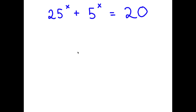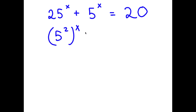In this problem I have 25 to the power of x plus 5 to the power of x is equal to 20. To solve this, I'm going to first rewrite 25 as 5 squared, so now I have 5 squared to the power of x plus 5 to the power of x is equal to 20.